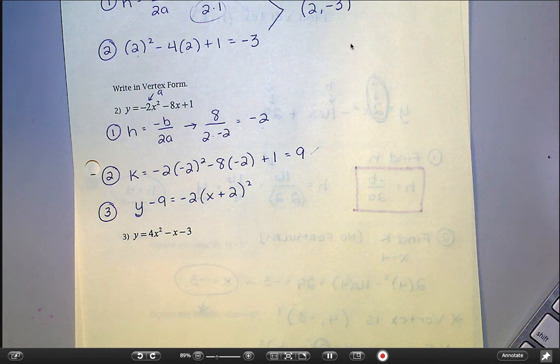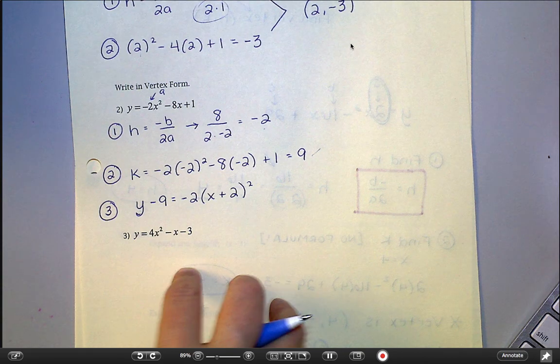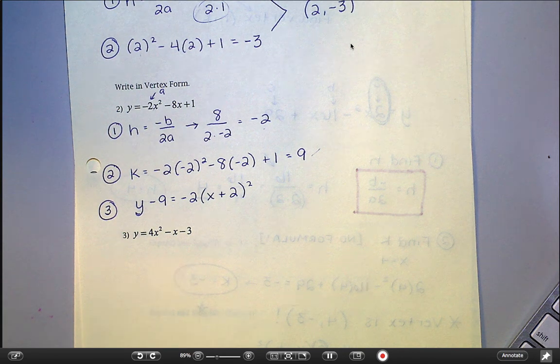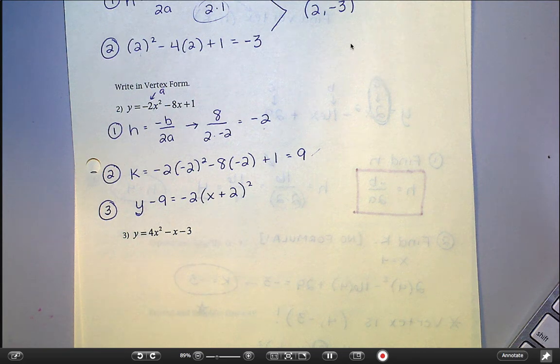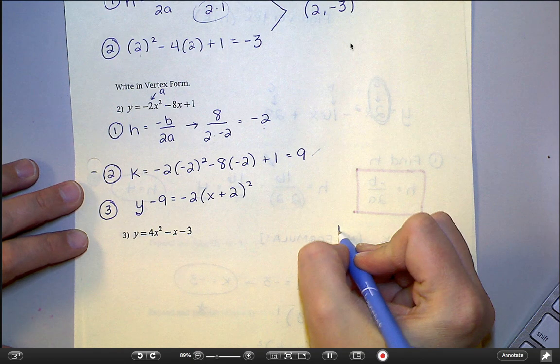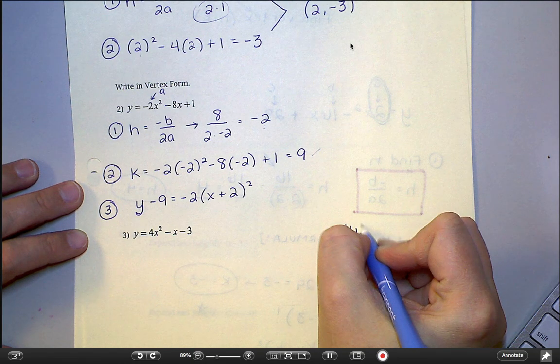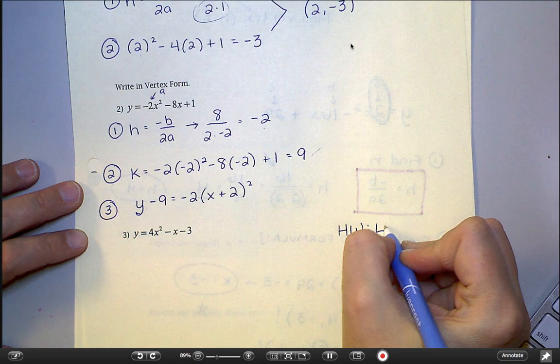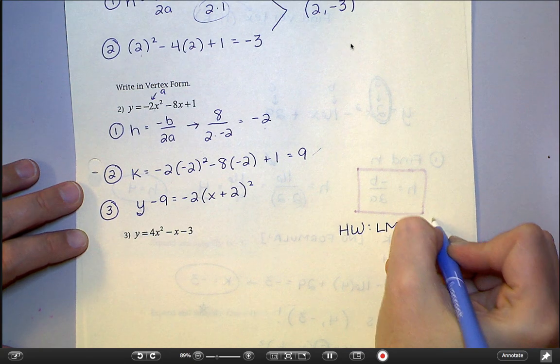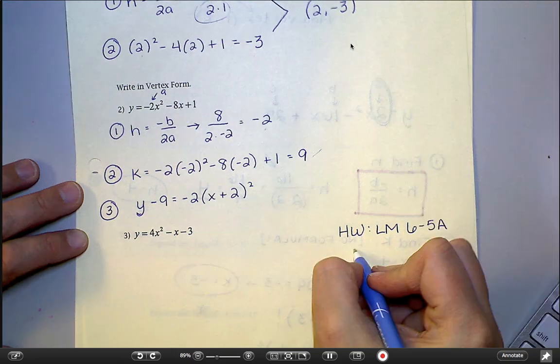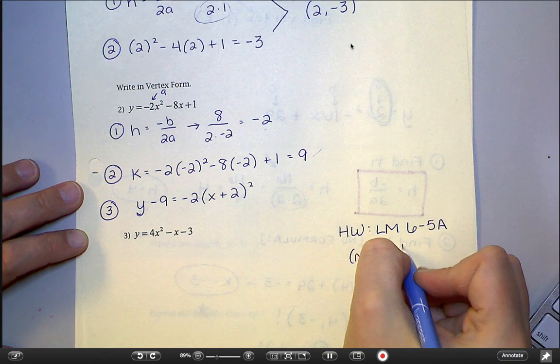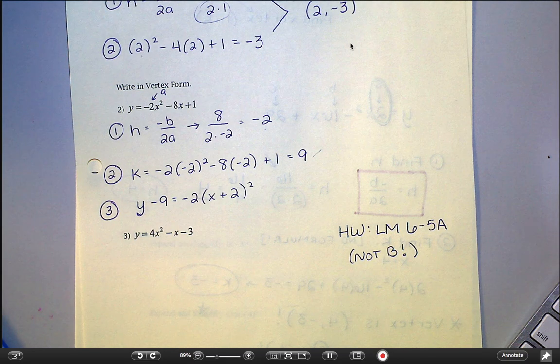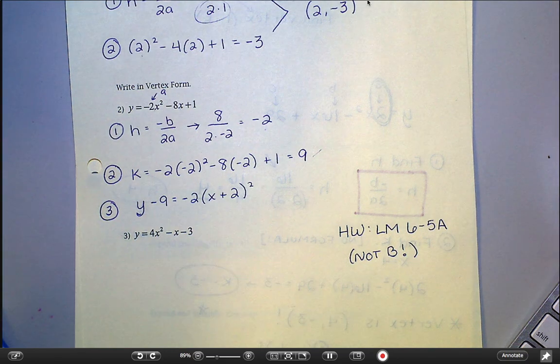I think we're good. I don't think we necessarily need to do example 3. I may throw that to you to give that a try on your own. But your homework for tonight, just to clarify, is going to be lesson master 6-5A, which is probably a little bit out of order in your packet because I'm jumping around a little bit. So make sure you're looking for 6-5A, not B. And we'll go over this in class tomorrow and then also talk about completing the square.